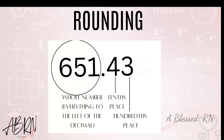Do you see the circled number? That is your whole number — everything to the left of the decimal. Now if we go back to the decimal and go to the right one place, that is the tenths place. And then one more place over is the hundredths place.